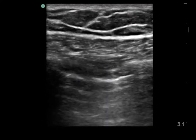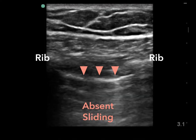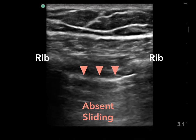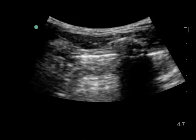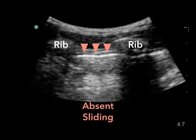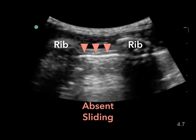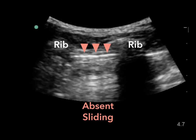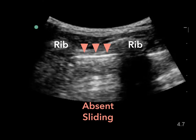Here we see ribs, but this pleural line does not appear to be moving. This is an absence of sliding and suggests that the visceral and parietal pleura are not in contact with each other. Here's another example using the curvilinear probe — we see ribs and a bright white pleural line that does not seem to be moving. This should make you suspicious for the presence of a pneumothorax. However, you can also have absence of sliding if you're scanning over a large bulla, or if a patient has had a main stem intubation with an absence of ventilation in the lung you're scanning.